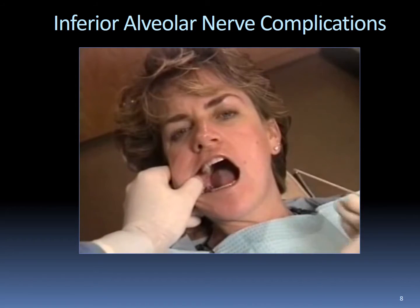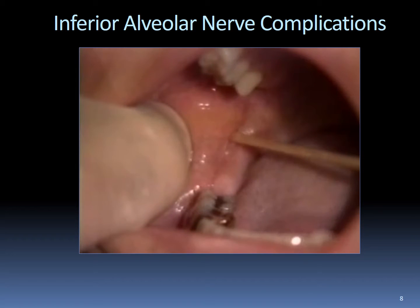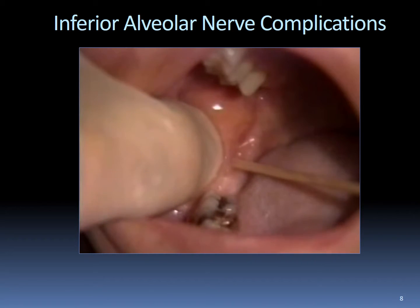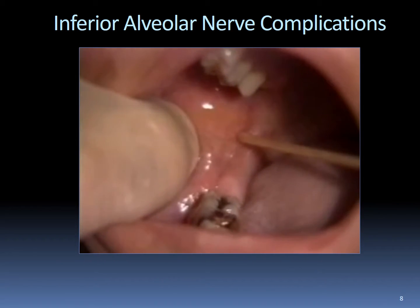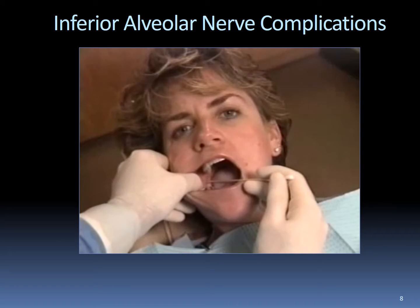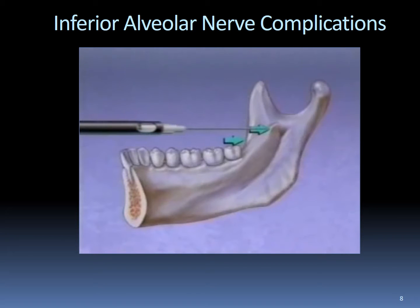Perhaps the most common cause for failure of the standard inferior alveolar nerve block is positioning the needle tip too inferiorly. This can happen if the coronoid notch is not palpated correctly — for instance, if the thumb is too medial and palpates the temporal crest. Even if the notch is correctly identified, bisecting the thumbnail will misidentify the insertion point if the thumb is not parallel to the mandibular occlusal plane. These errors are more likely in patients missing posterior teeth. The prognathic mandible represents a special challenge because the greatest concavity of the coronoid notch is not predictive of the mandibular sulcus, which lies some distance superiorly. Therefore, in patients with class III malocclusion, the insertion point should be made one centimeter above the line bisecting the thumbnail.